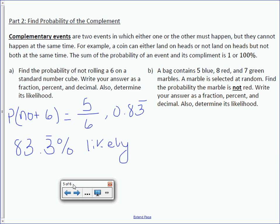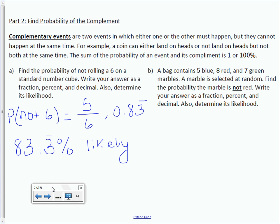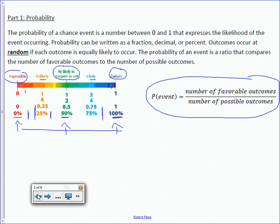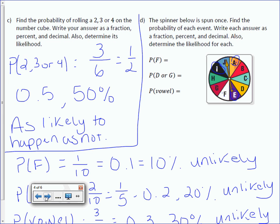A bag contains 5 blue, 8 red, and 7 green marbles. The marble is selected at random. Find the probability the marble is not red. Write your answer as a fraction, percent, and a decimal. Also determine its likelihood. Well, we need to know the total. To find the total, let's add those up. 8 and 5 is 13, plus 7 is 20. So I know my total outcomes is 20. Not red. Well, blue is not red, and green is not red, which makes 12 of them not red. Reduce it, divide by 4. You get 3 fifths is your fractional probability, which is 0.6 as a decimal, times by 100, 60%. Look at your chart. 60% is somewhere in this range, which means it is likely to occur.